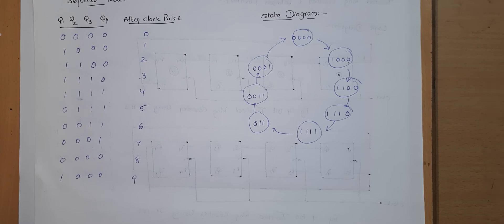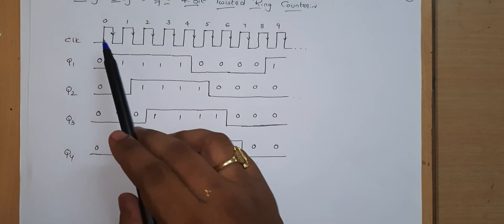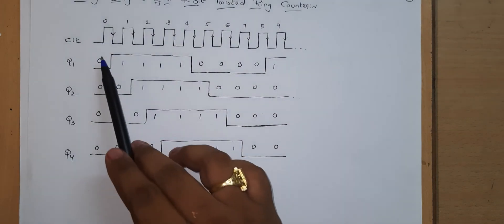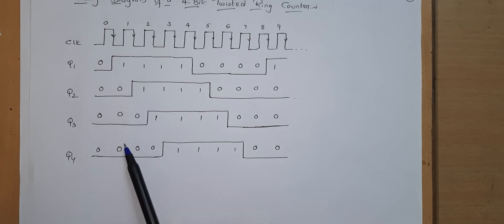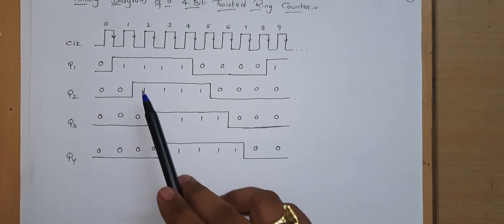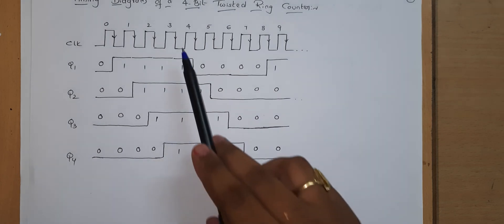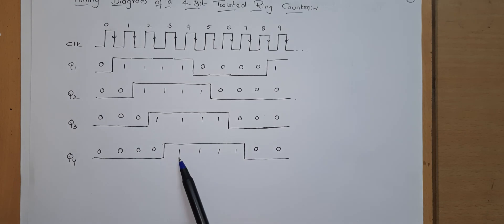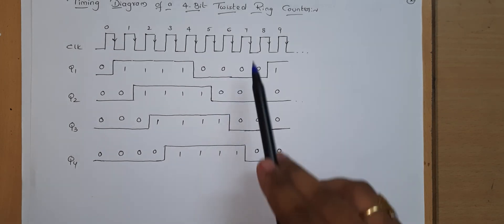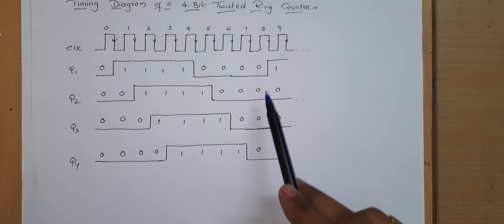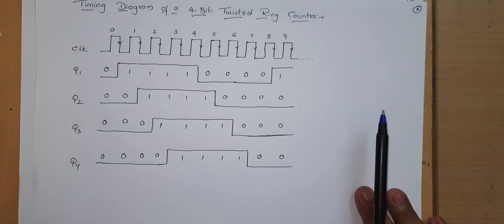Let us now look at the timing diagram of the 4-bit twisted ring counter. At clock 0, Q1=0, Q2=0, Q3=0, Q4=0. At clock pulse 1: Q1=1, Q2=0, Q3=0, Q4=0. At clock pulse 2: Q1=1, Q2=1, Q3=0, Q4=0. At clock pulse 3: Q1=1, Q2=1, Q3=1, Q4=0. At clock pulse 4: Q1=1, Q2=1, Q3=1, Q4=1. At clock pulse 5: Q1=0, Q2=1, Q3=1, Q4=1. At clock pulse 6: Q1=0, Q2=0, Q3=1, Q4=1. At clock pulse 7: Q1=0, Q2=0, Q3=0, Q4=1. At clock pulse 8: Q1=0, Q2=0, Q3=0, Q4=0. At the ninth clock pulse it comes back to Q1=1, Q2=0, Q3=0, Q4=0. This is the timing diagram of the 4-bit twisted ring counter.